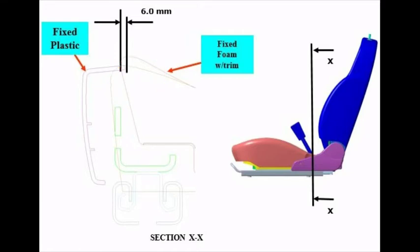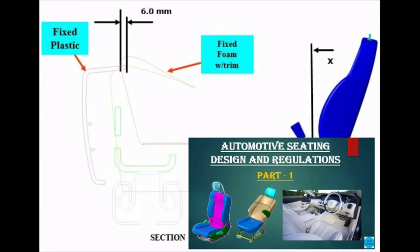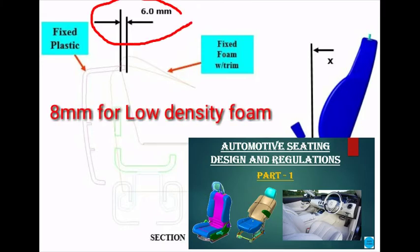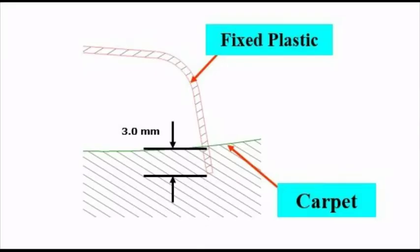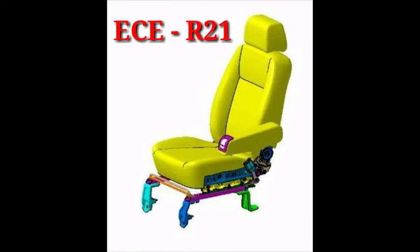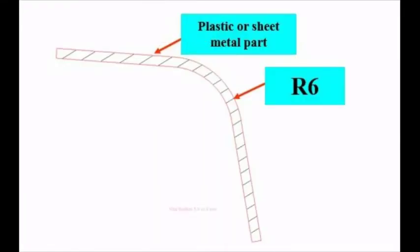There are two types of foams used in seating: high density and low density. High density foam is used for the bolster, as covered in a previous video tutorial — link is provided. For low density foam, we provide 8mm overlap. When fixing a plastic part with carpet, 3mm crush can be provided. For any plastic part design, ECE R21 — Economic Commission for Europe, Regulation 21 — recommends a minimum 3.5mm radius for plastic and sheet metal parts.